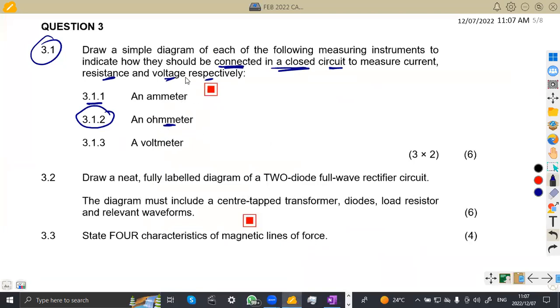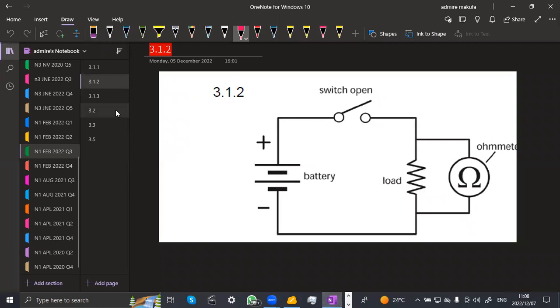Then a voltmeter. Also a voltmeter is connected in parallel. If you cross-check, there is another question that we did, question number one, which was asking is a voltmeter connected in series or parallel. Now they want you to draw that.